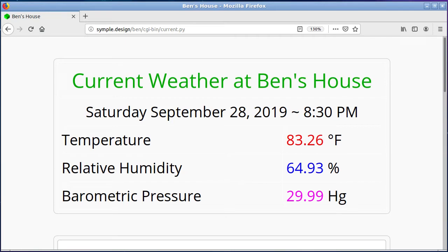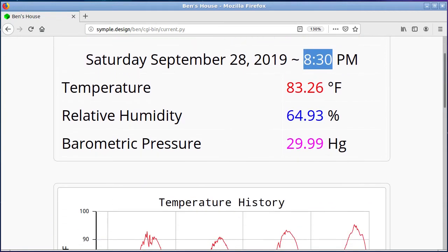When you call this script current dot py, it just pulls the last week's worth of data and shows you the current stuff. This ran at 8:30—that was the last time it made a measurement. It was 83 degrees, 64% relative humidity, and holding pretty steady at 29.99 inches of mercury, which we've been there for the last almost two weeks I think.